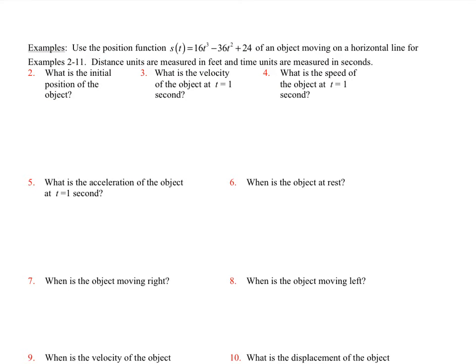Now we get into all the fun stuff, all the different applications. So say, for instance, we do have a position function based on this of an object moving on a horizontal line. Now what we want to do is answer all these different kinds of questions. They do tell us that we have feet, time units are measured in seconds. So what is the initial position of the object? So we want to know what S of 0 is. So if I plug in 0, I'm going to get 24.